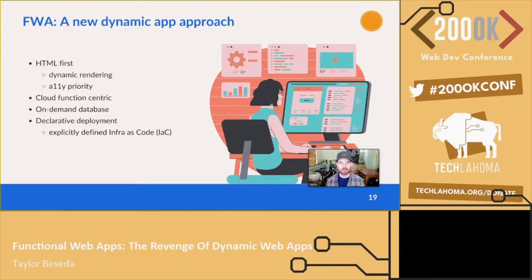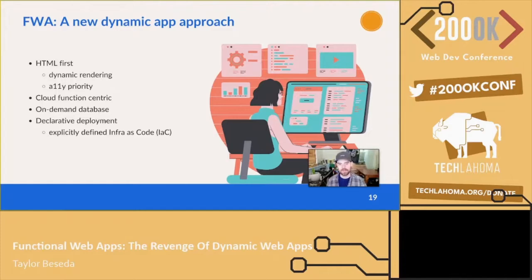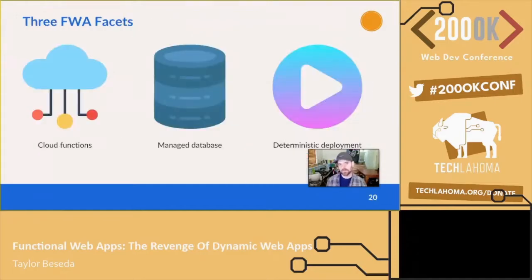FWA is cloud-function centric — many small linked apps working together rather than a larger tangled monolithic one. Cloud functions is a specific term we've chosen; it's somewhat synonymous with serverless or microservices, but both of those terms have caused confusion so we settled on cloud function. FWAs also have an on-demand managed database that auto-scales — no socket or connection pooling — and they're very fast. Finally, declarative deployment: infrastructure explicitly defined as code (IaC). This leads to the three facets of an FWA: cloud functions, a managed database, and deterministic deployment.